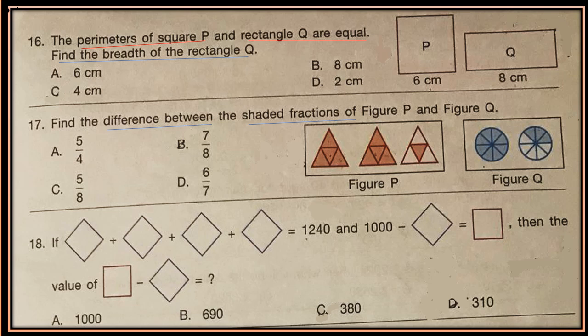Question 18: 4 rhombus = 1,240 and 1000 minus rhombus = square. Find the value of square minus rhombus. From the first equation, calculate the value of one rhombus, then substitute that value into equation 2 to find the value of square, and then calculate square minus rhombus.